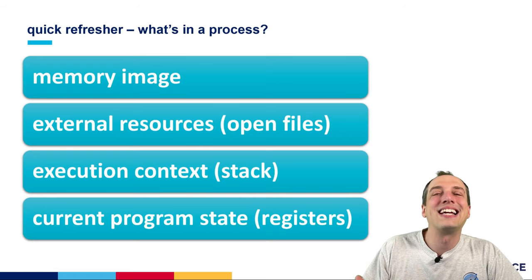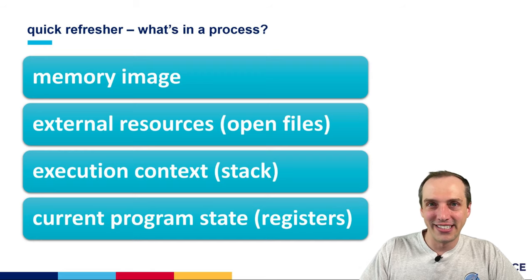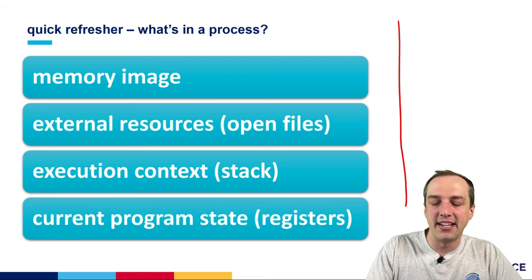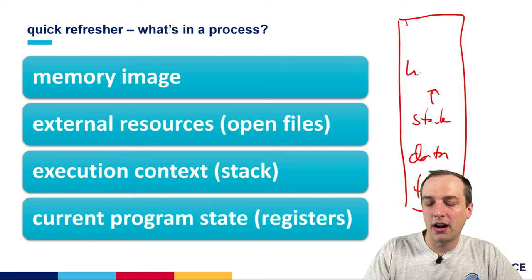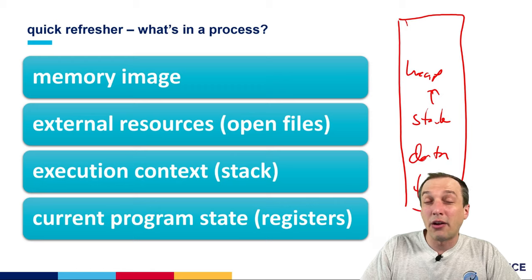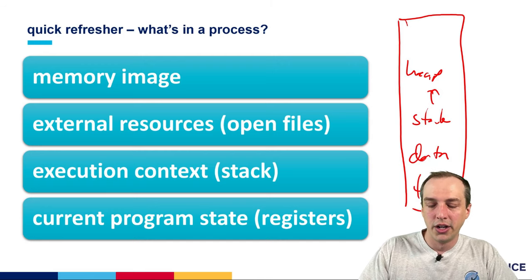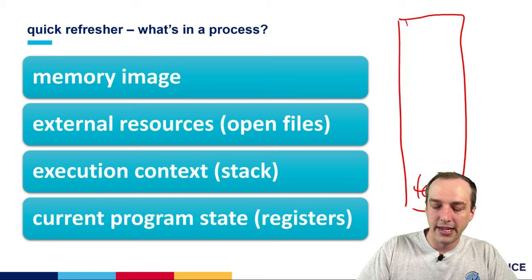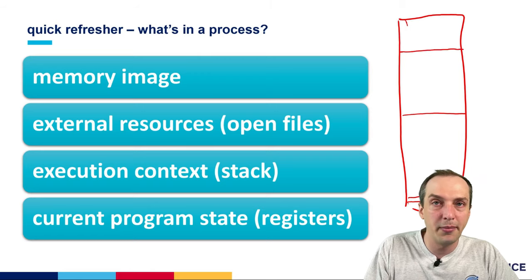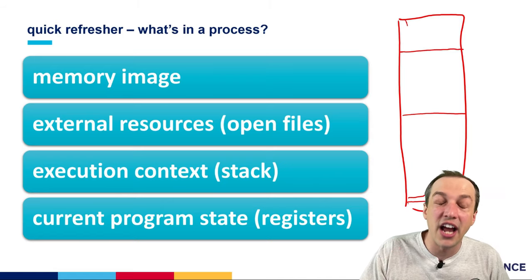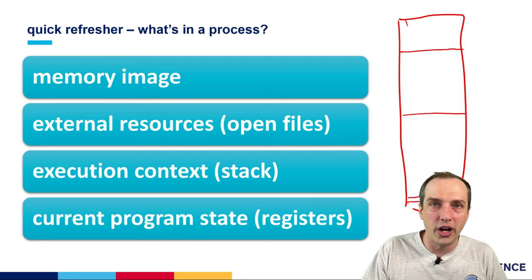As a quick refresher, let's remember what exists within a process. We have our memory image — we'll often draw that as a big vertical rectangle. We've got our text segment at the bottom, our data section, our stack which grows up, and our heap. In virtual memory space, the text is a tiny sliver at the bottom, data is a tiny sliver, the stack is a tiny sliver at the top, and the heap is a tiny sliver as well. They're very far away from each other in the virtual address space with plenty of space between them.